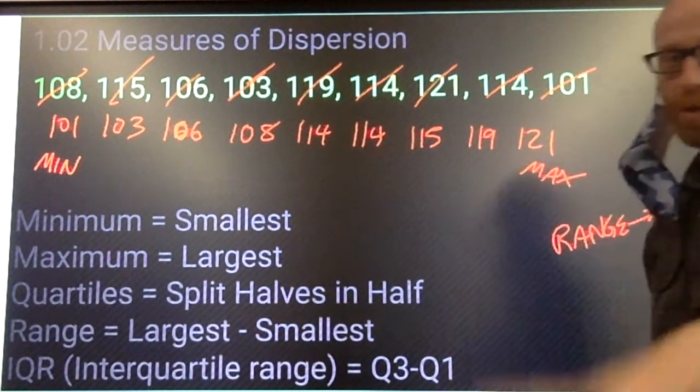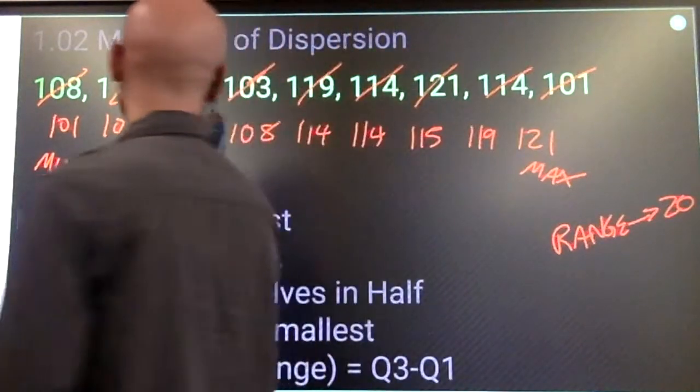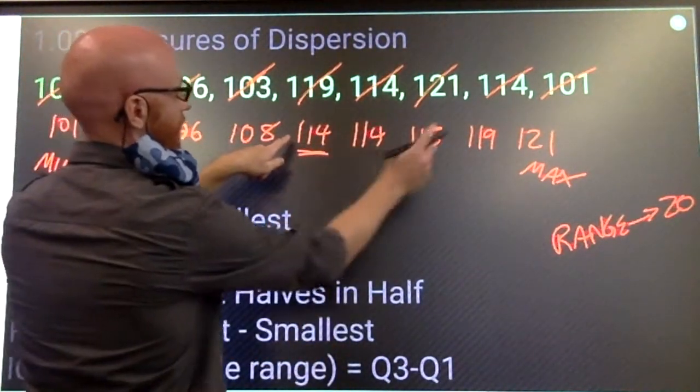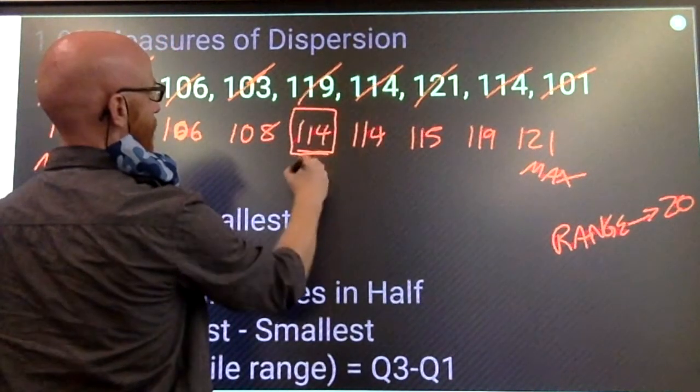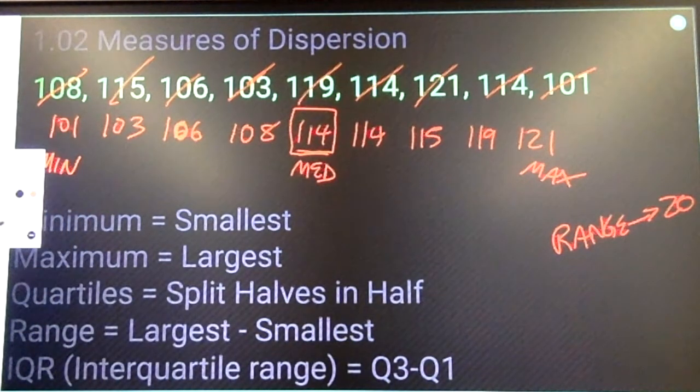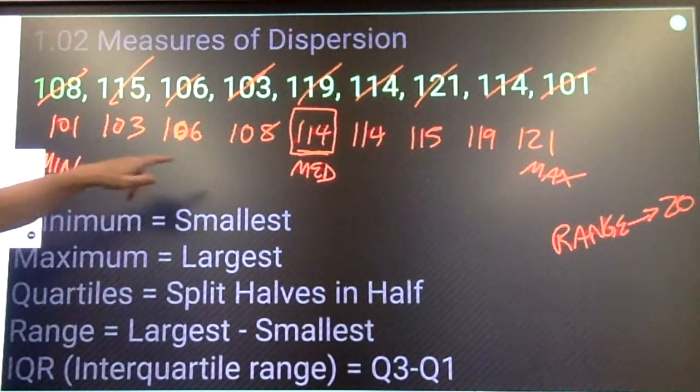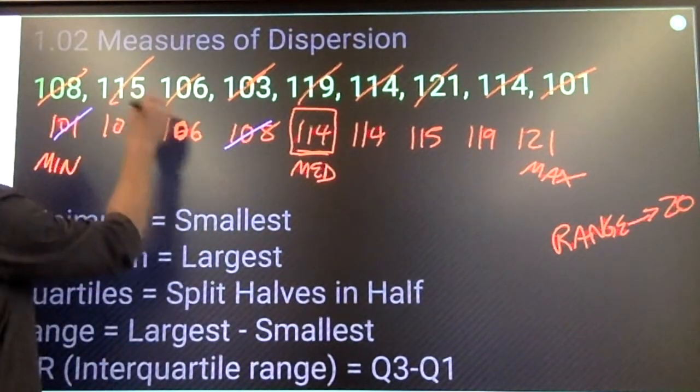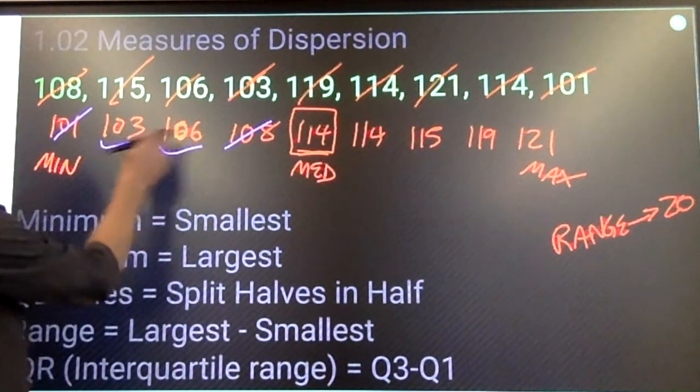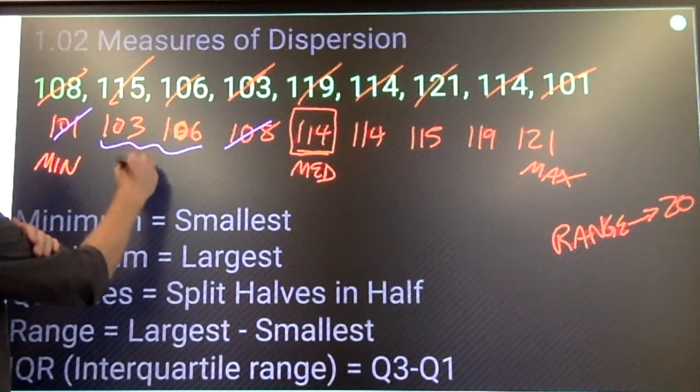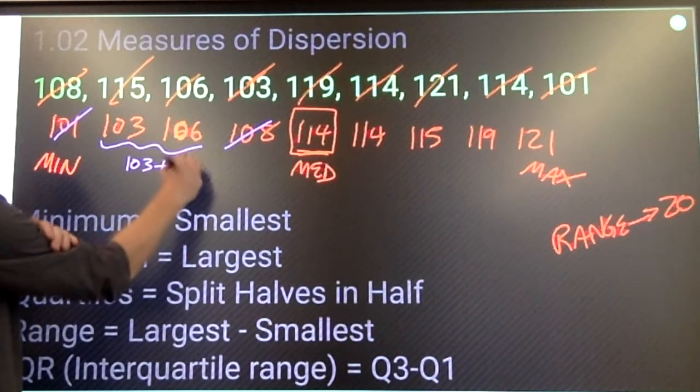In order to find the quartiles, you have to find the median first. That's our median. Similar to the median, if when I am splitting my lower half in half, I end up with two numbers in the center, I want to find a number halfway between them.